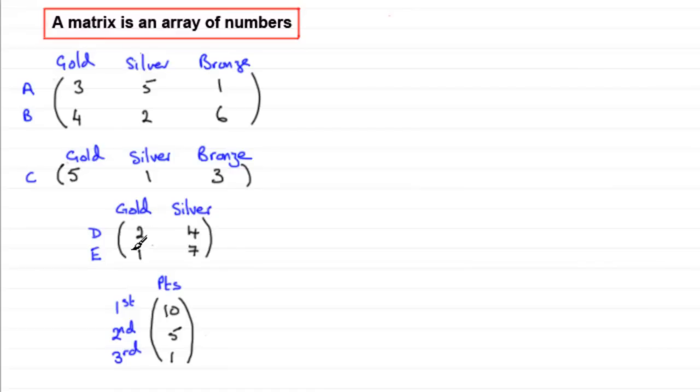which is often referred to as a square matrix. For obvious reasons, it's got two rows and two columns.